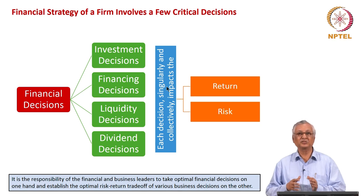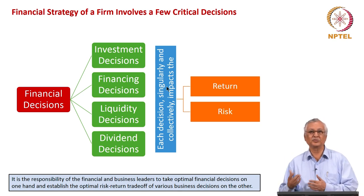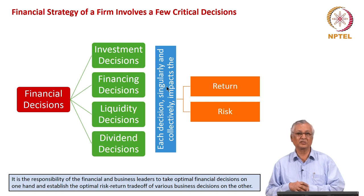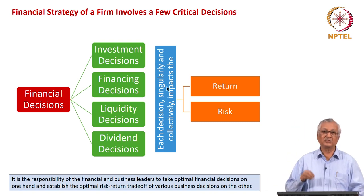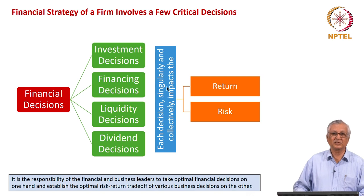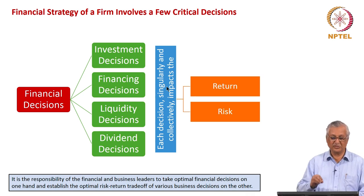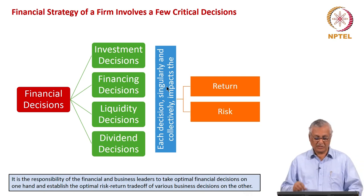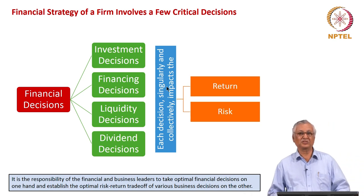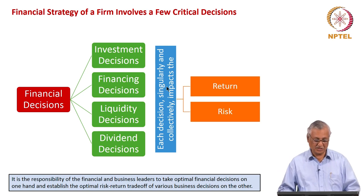Each decision singularly as well as together carries its own set of risk and reward mechanisms for the company. It is the responsibility of financial and business leaders to take optimal financial decisions — not just one good investment decision or one good financial decision, but a combined set of all these decisions so that the risk-return profile of the company is in a stable situation.